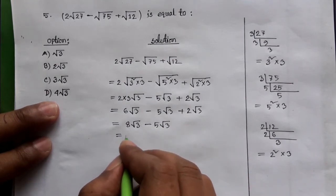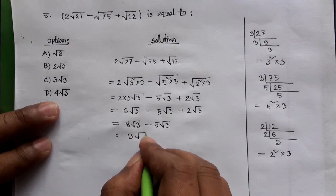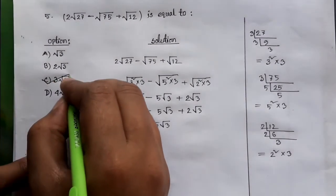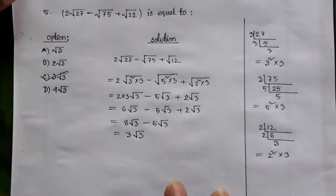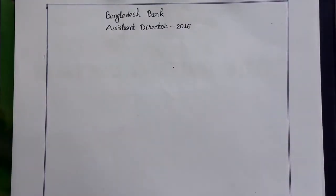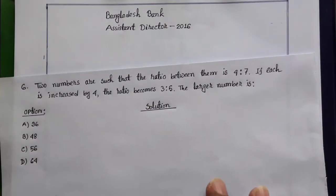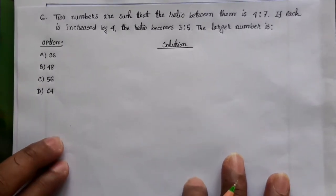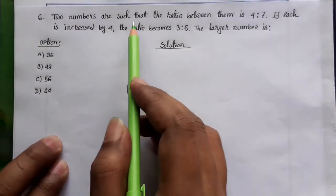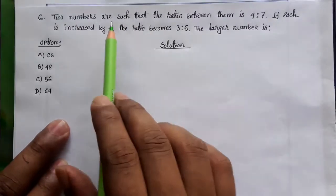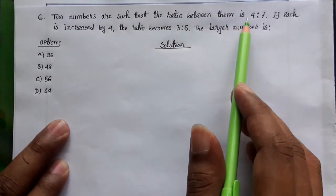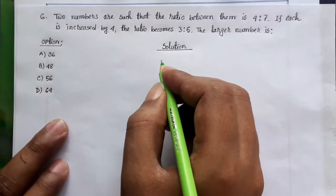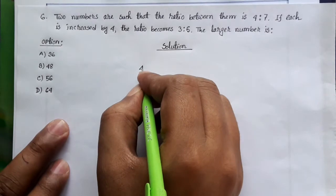We count by root 3: these are 5 root 3, and the other terms give 8√3 minus 5√3. So 8√3 minus 5√3 is 3√3. The answer is 3√3.